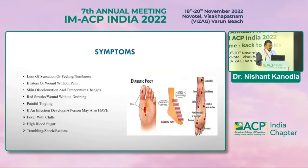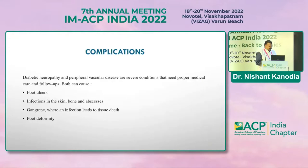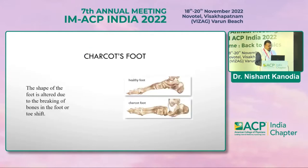Symptoms may include blisters, loss of sensation, numbness, red streaks with or without drainage, and painful tingling sensation. If infection develops, the patient may have fever, high blood sugar, trembling, shock, and redness. Neuropathy and peripheral vascular disease are severe conditions requiring proper medical care and follow-up, as both can cause foot ulcers, skin and bone infections, abscesses, gangrene, and foot deformity.